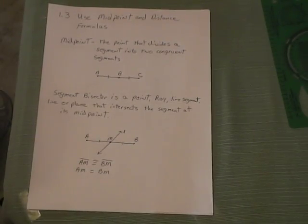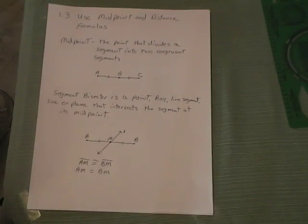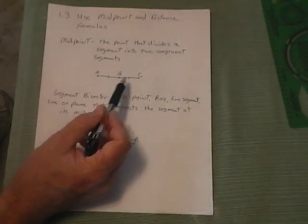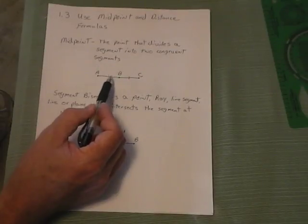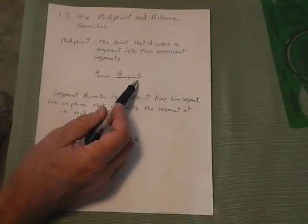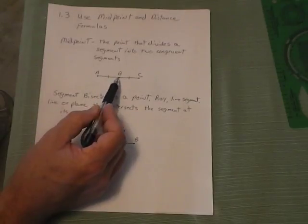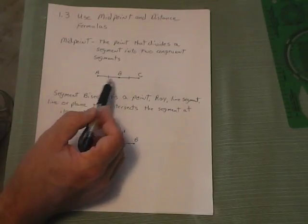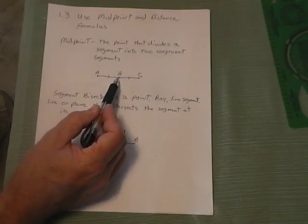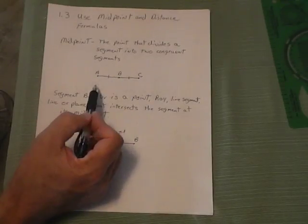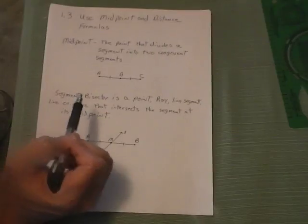Section 1.3 using the midpoint and distance formula. The midpoint is a point that divides a segment into two congruent segments. So we have segment AC, and B is the midpoint because it divides AC into two congruent segments, as shown by the marks. So segment AB is congruent to segment BC, which means those two lengths are the same.